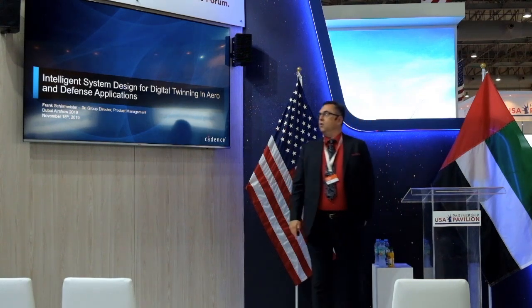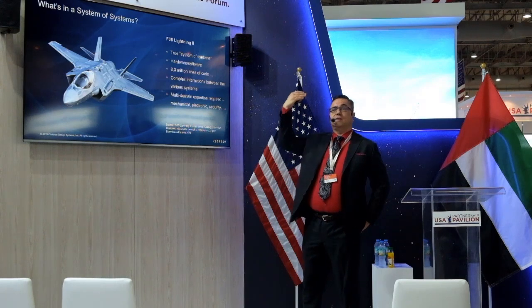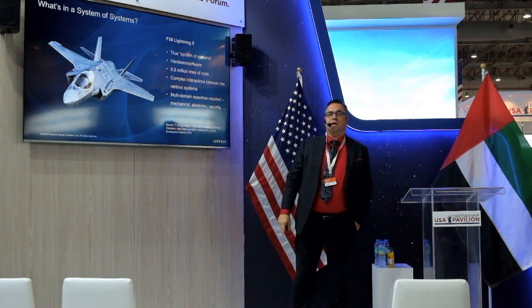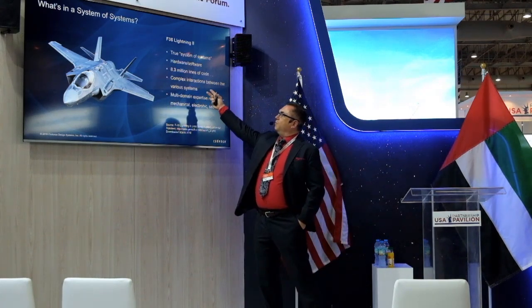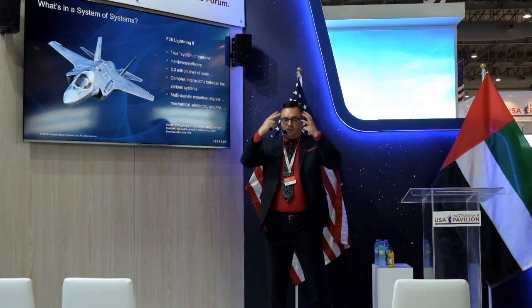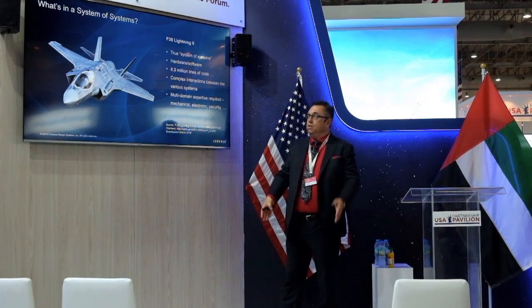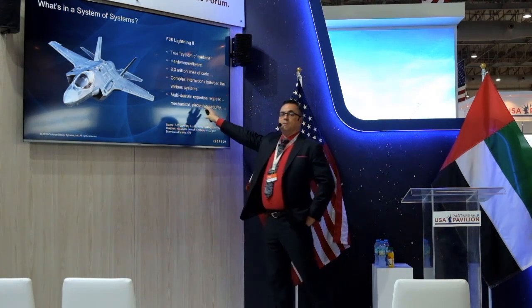If you look into a jet plane like the F-35 — we had lots of cool ones here yesterday and in about ten minutes we'll probably hear them flying over — it's a true what we refer to in the design world as a system of systems. We have hardware and software in it. Just for the cockpit, we have 8.3 million lines of code. The pilot has a VR headset where he can basically look down and see what he's flying over — a very complex interaction.